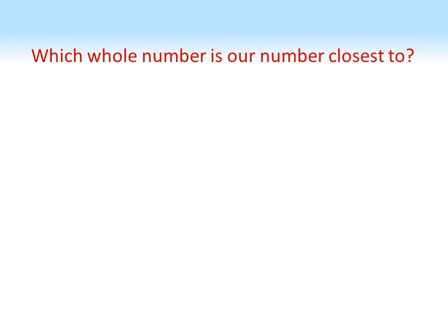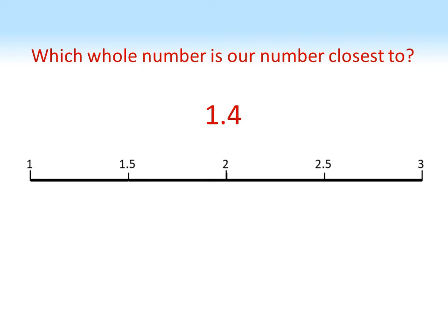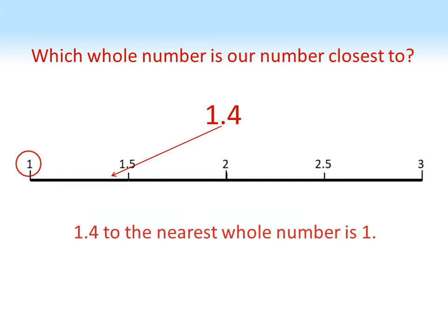Remembering our guidance, but looking at the number 1.4 this time, we'll put it on our number line — it'll be there just below 1.5, so it's between 1 and 2 but it's closer to 1. So 1.4 to the nearest whole number is 1.